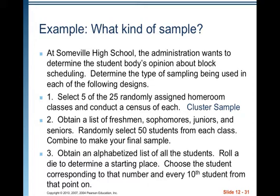Number two: obtain a list of freshmen, sophomores, juniors, and seniors; randomly select 50 from each class; combine to make your final sample. That is a stratified sample. Number three: obtain an alphabetized list of students; roll a die to determine a starting place; choose the student corresponding to that number and every tenth student from that point on. That would be a systematic sample.